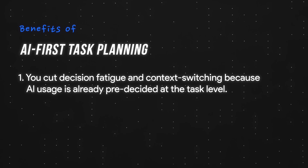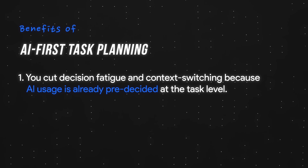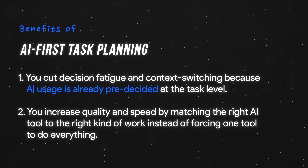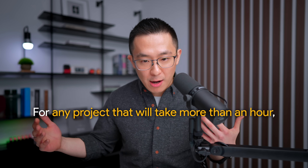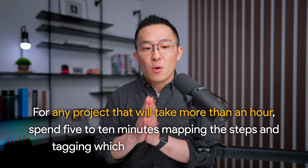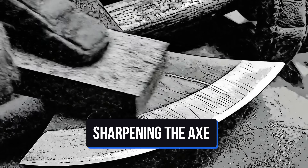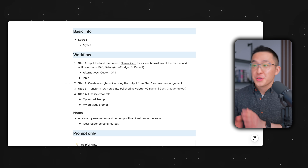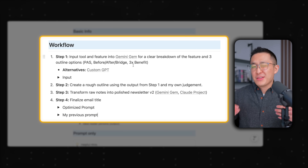At this point, the benefits should be pretty clear. First, you cut decision fatigue and context switching because AI usage is already pre-decided at the task level. Second, you increase quality and speed by matching the right AI tool to the right kind of work instead of forcing one tool to do everything. The rule of thumb: for any project that will take more than an hour, spend 5 to 10 minutes mapping the steps and tagging which ones are AI or manual. Pro tip: create templates for recurring workflows so that next time you can focus on executing instead of planning from scratch.